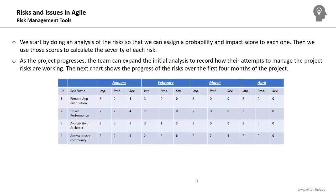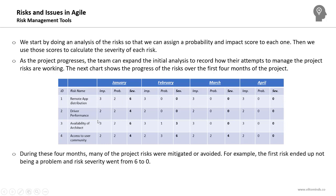The next chart shows the progress of risks over the first four months of a project — an example of monitoring risk severity throughout. Four risks are tracked: remote application distribution, driver performance, availability of architect, and access to user community. Each month, impact score, probability score, and their product — the severity — are recorded. For example, risk one had a severity of 6 in January and 0 in February, either because the risk window passed or a response plan reduced its probability to zero.